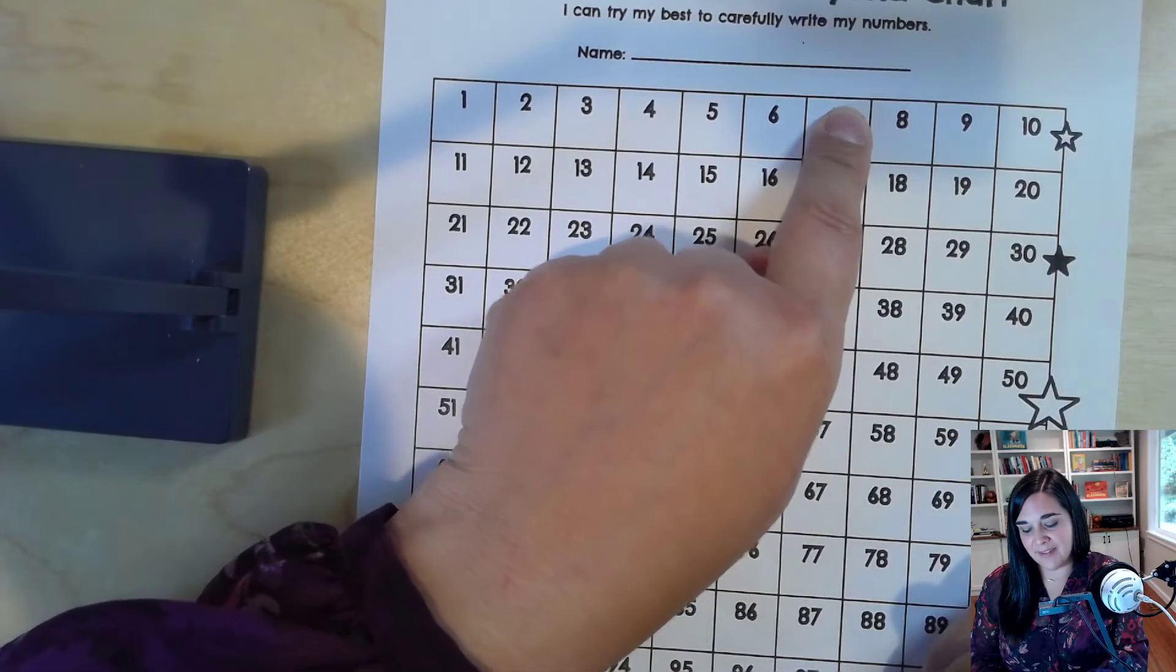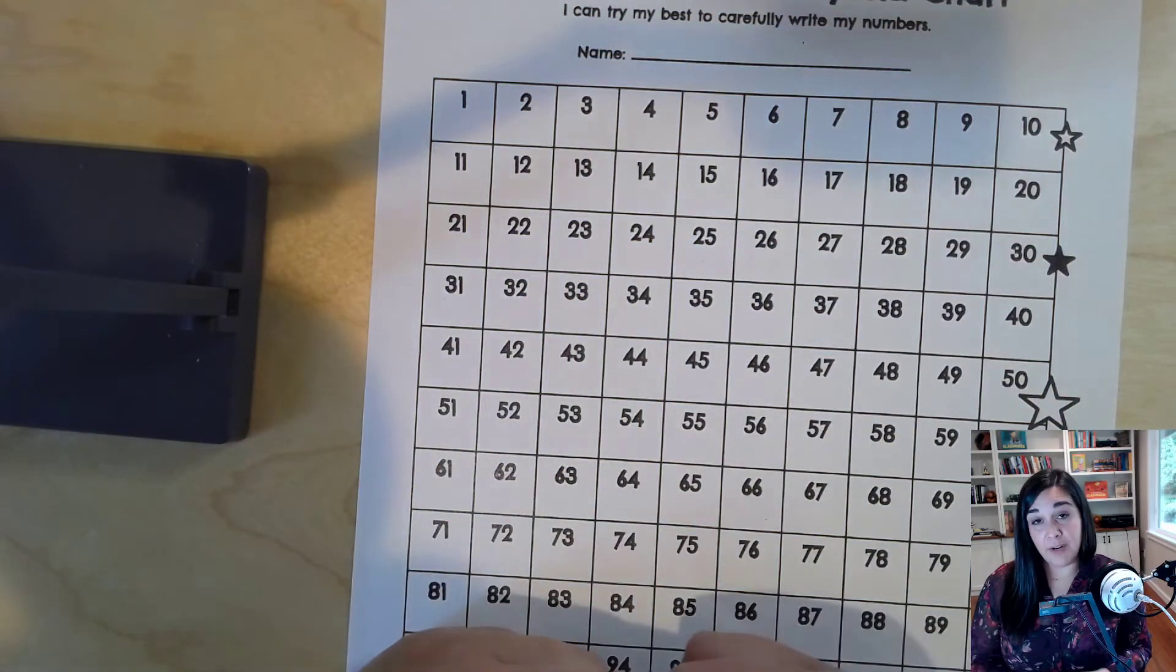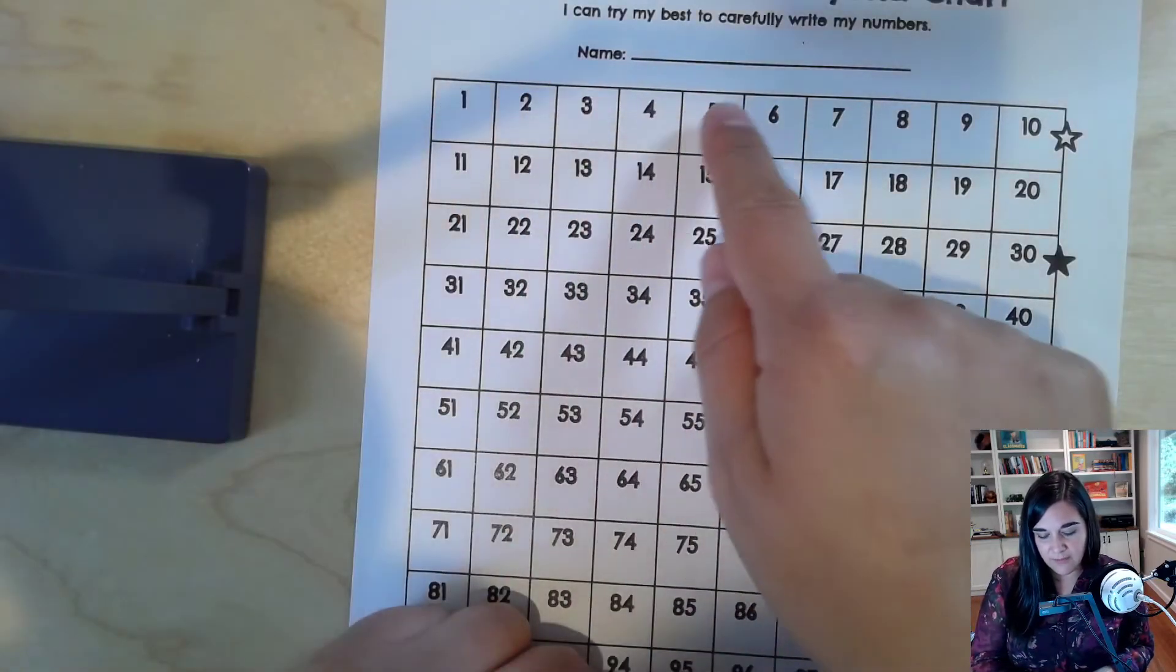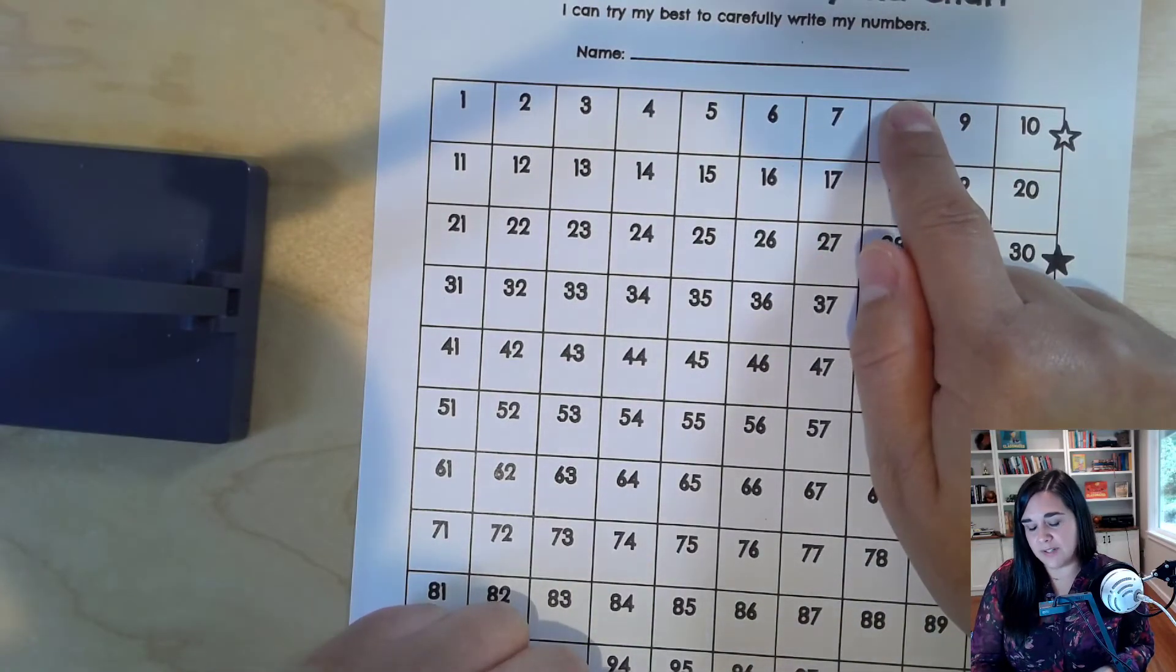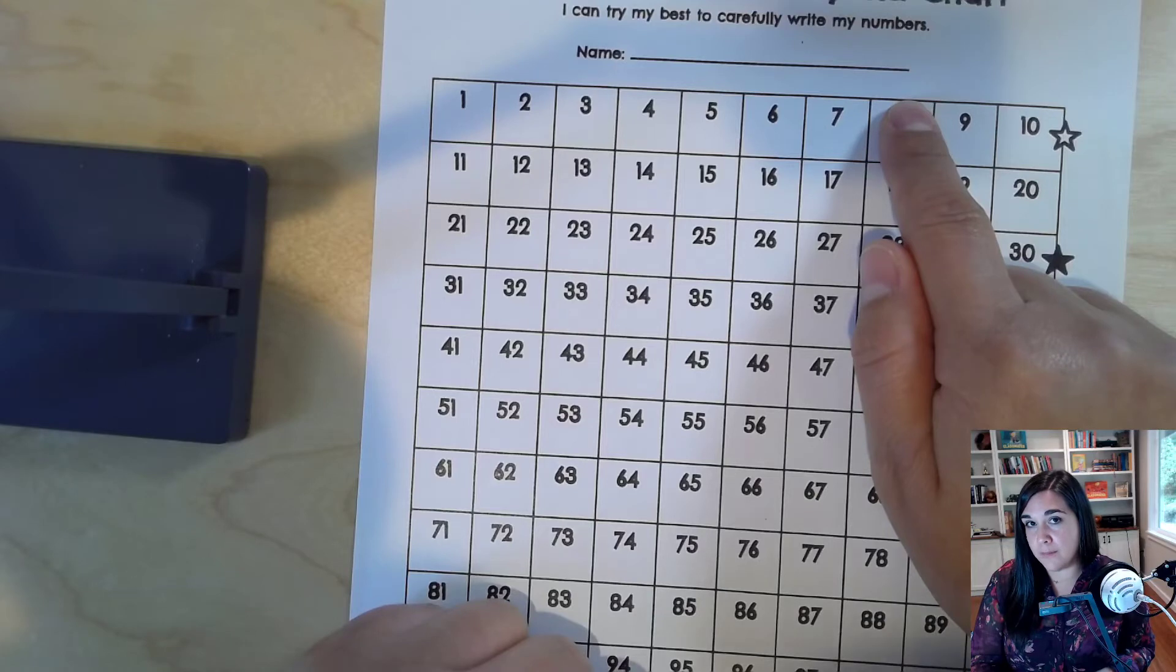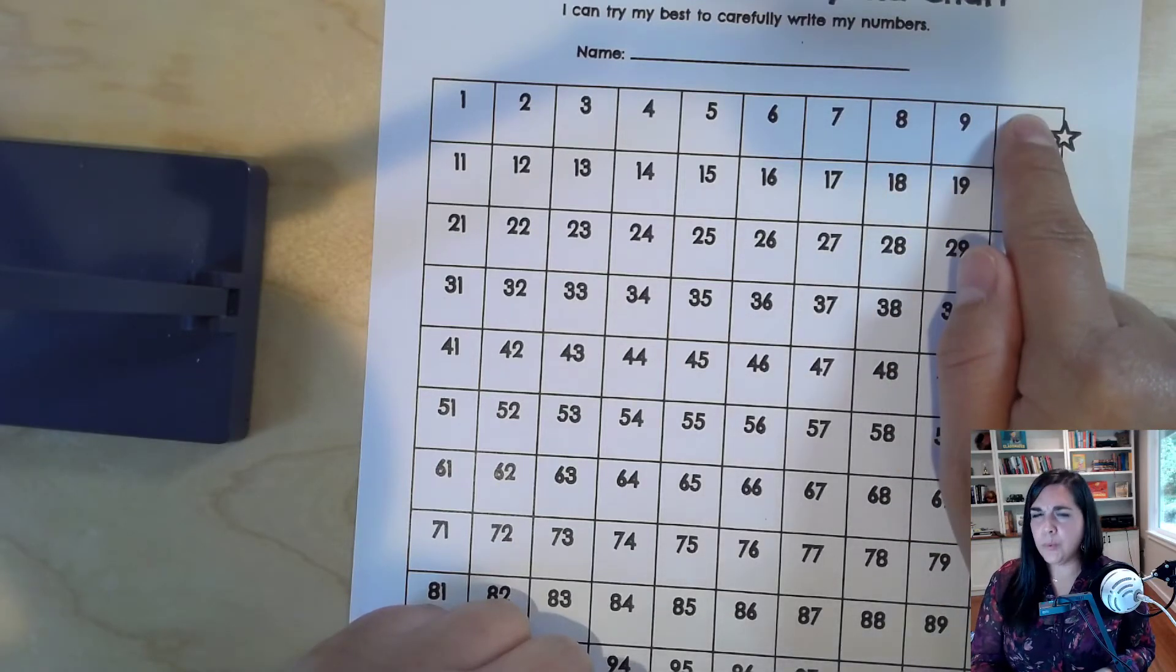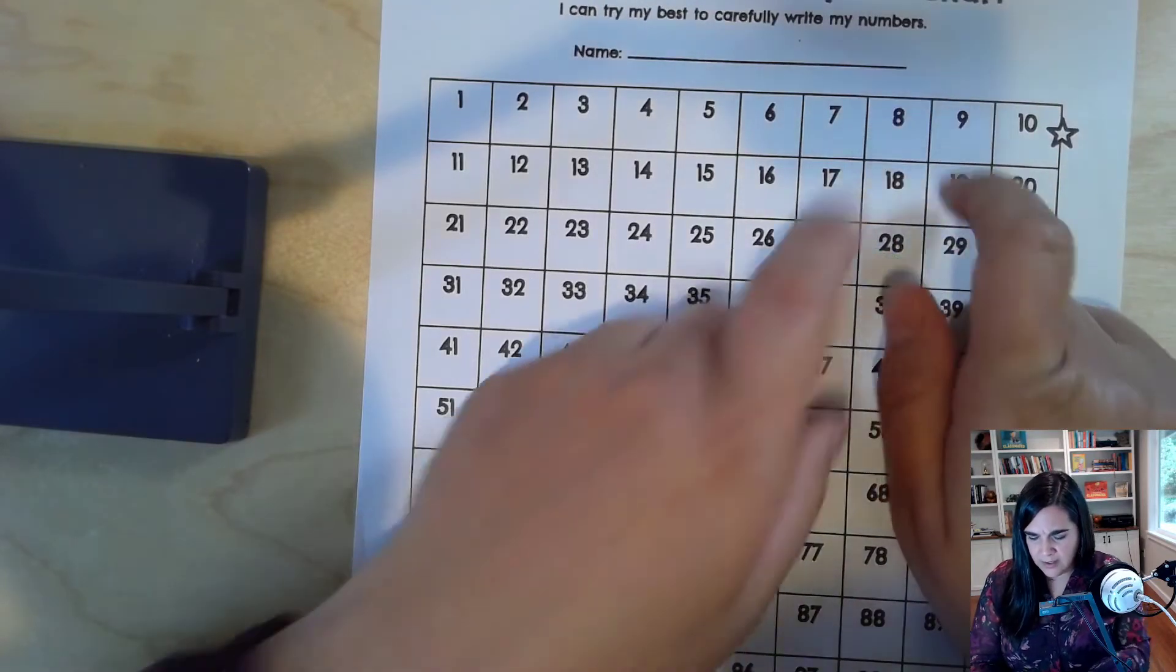Hmm. If I put my finger on the number 8, remember, if you're not sure what it is, you can start at the 1 and count up. 1, 2, 3, 4, 5, 6, 7, 8. And I want to go 4 more. 1, 2. Wait a minute. There's nothing left. What? How can I go 4 more? If I start at 8. 1, 2. What do I do?